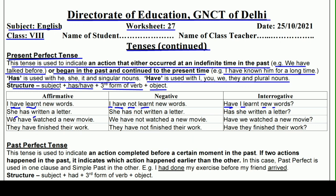She has written a letter — वह एक letter लिख चुकी है। Negative: She has not written a letter — वह letter नहीं लिख चुकी है। Interrogative: Has she written a letter? — क्योंकि she के साथ 'has' लगता है, has बाहर निकाल दो और बाकी affirmative sentence वैसा ही रहेगा।